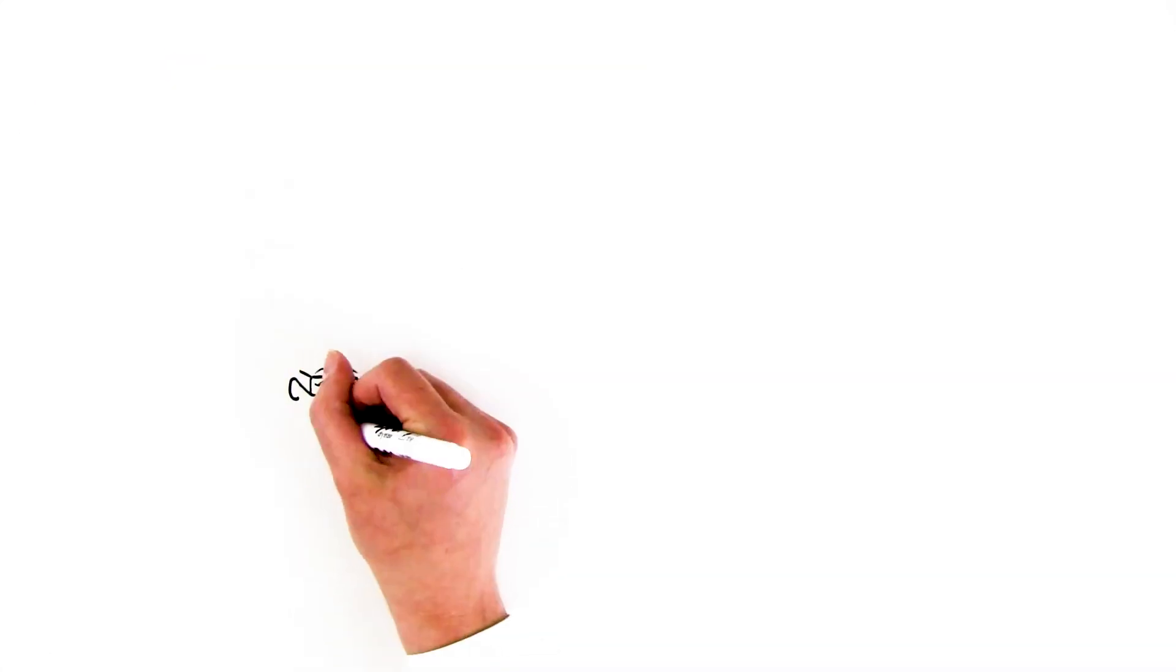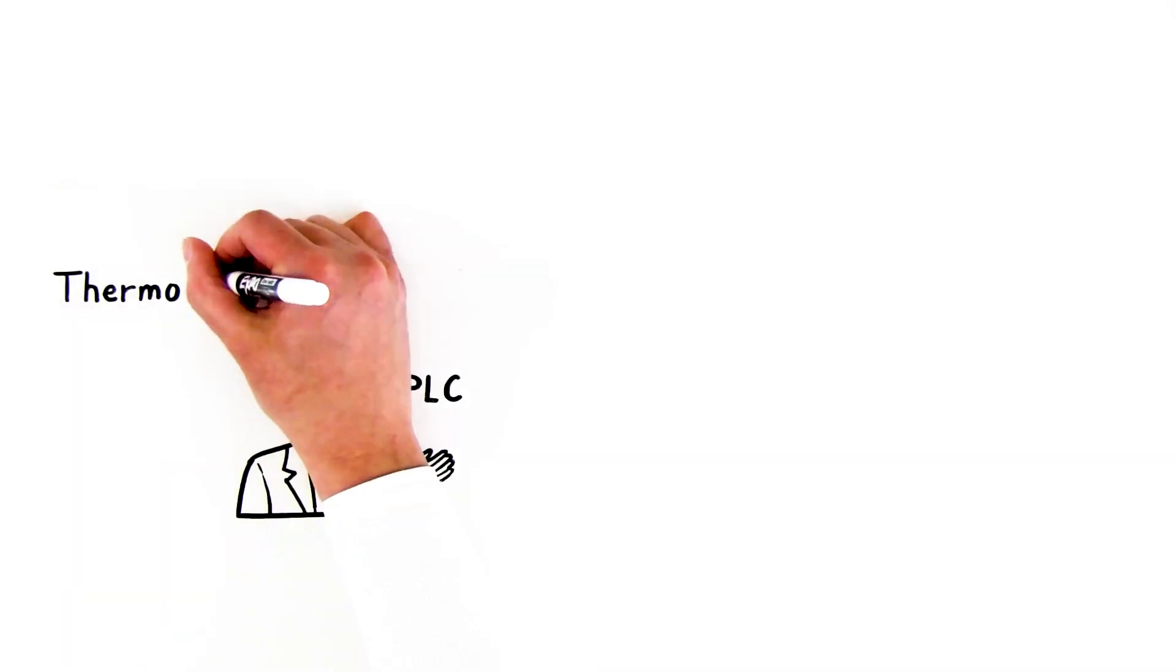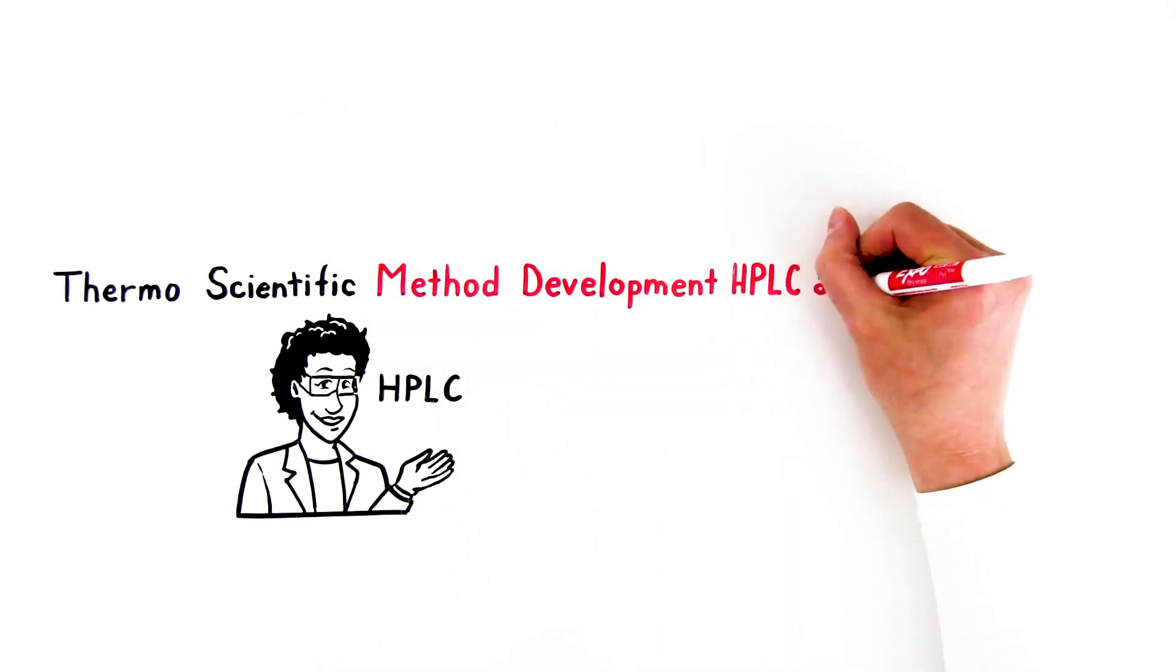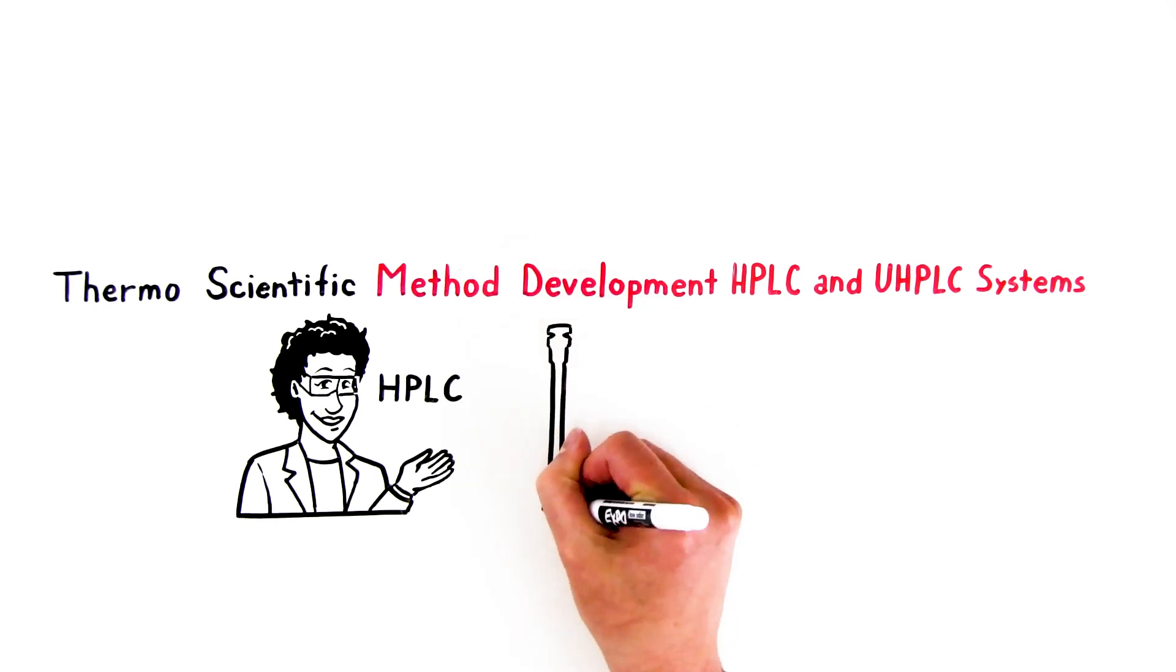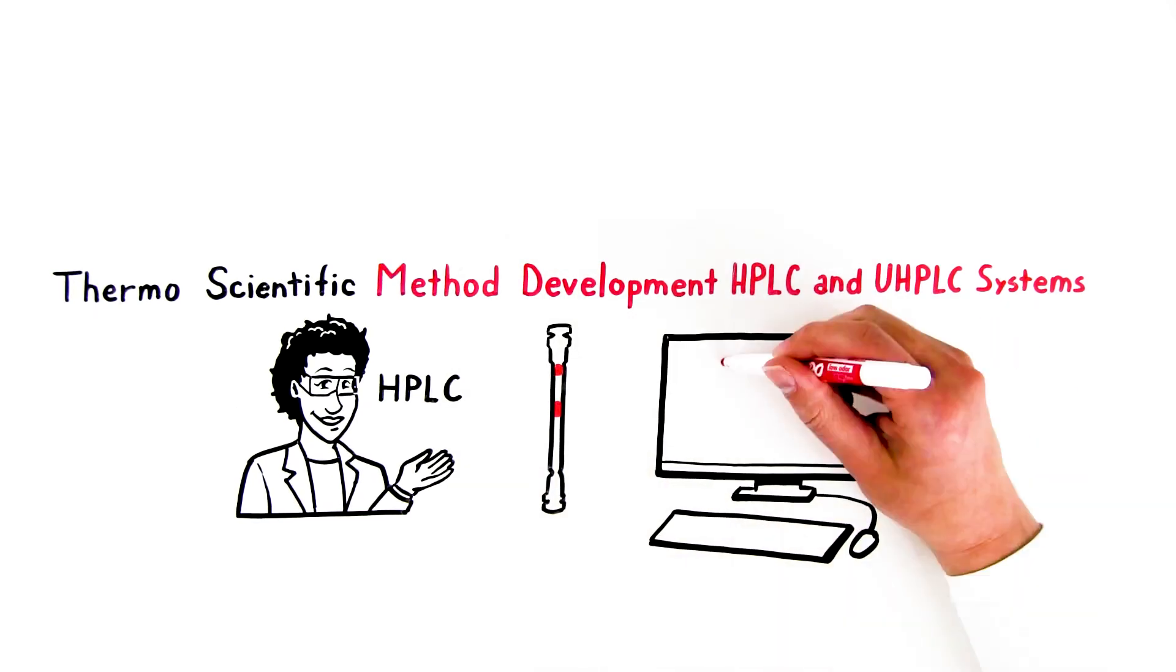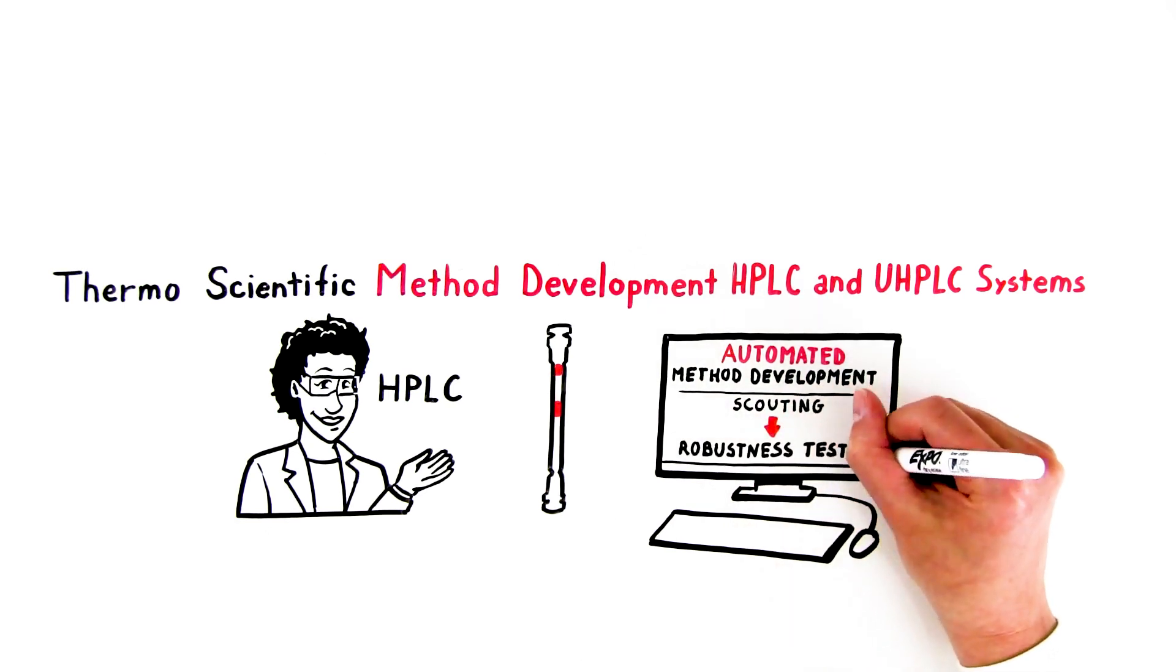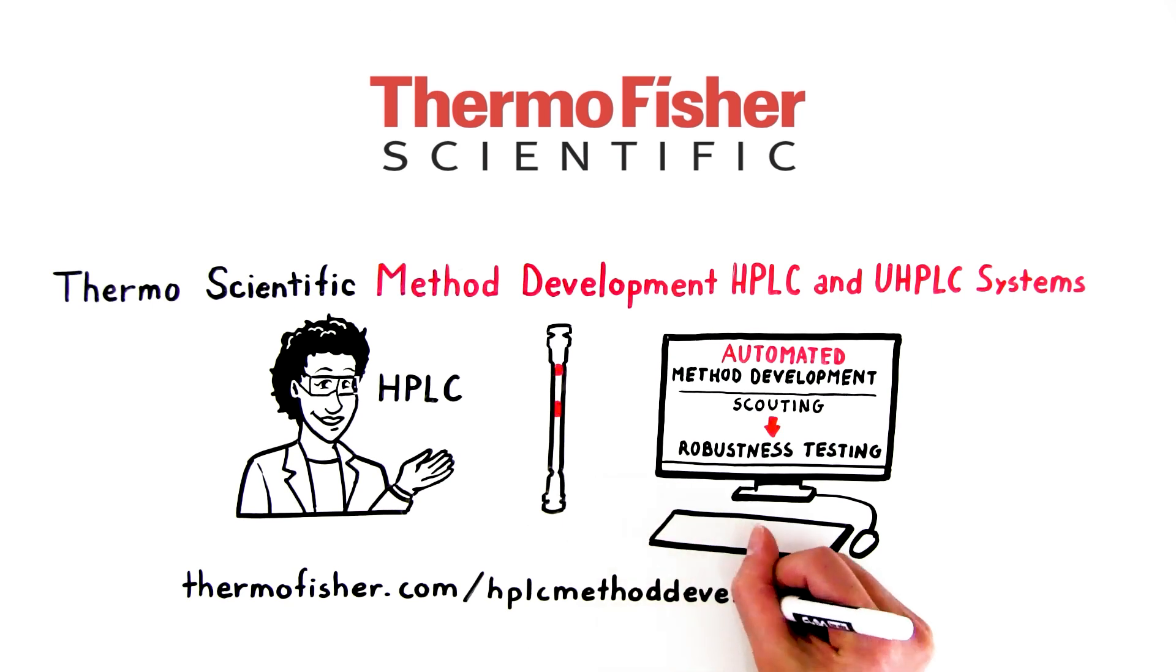As you can see, HPLC method development is a complex process. Thermo Scientific method development HPLC and UHPLC systems offer tools to help, including hardware for column and mobile phase switching and dedicated software for automated method development from scouting through robustness testing. Learn more at thermofisher.com/HPLC method development.